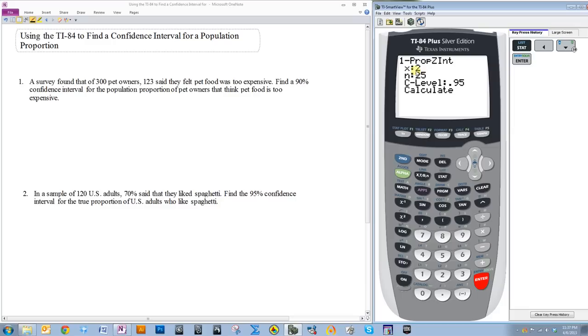Now, in this function, OnePropZint, there are three things it's going to ask for: X, N, and C.